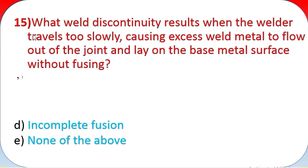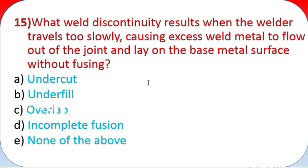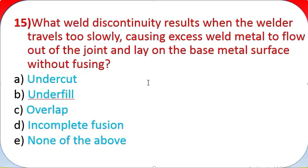Question 15: What weld discontinuity results when the welder travels too slowly causing excess weld metal to flow out of the joint and lay on the base metal surface without fusing? A - undercut, B - underfill, C - overlap, D - incomplete fusion, E - none of the above.